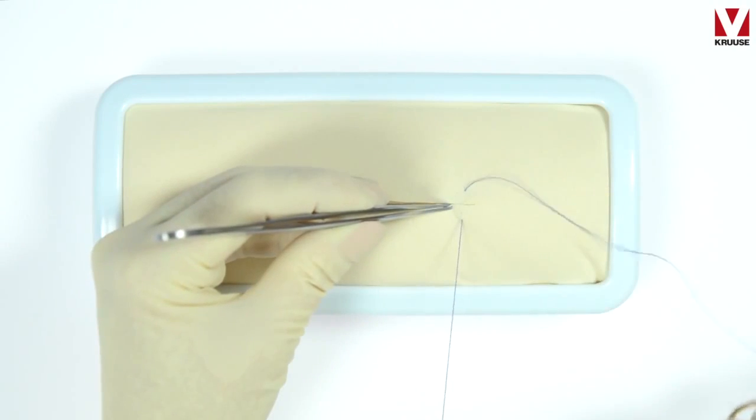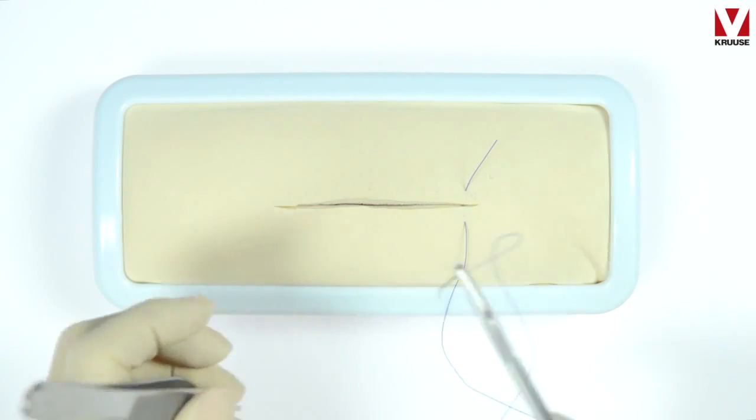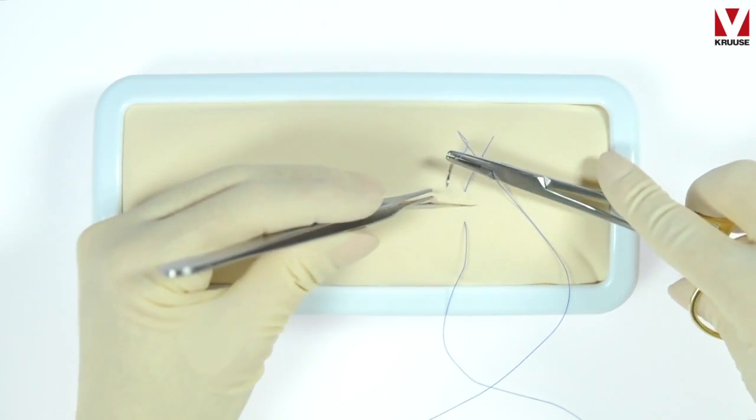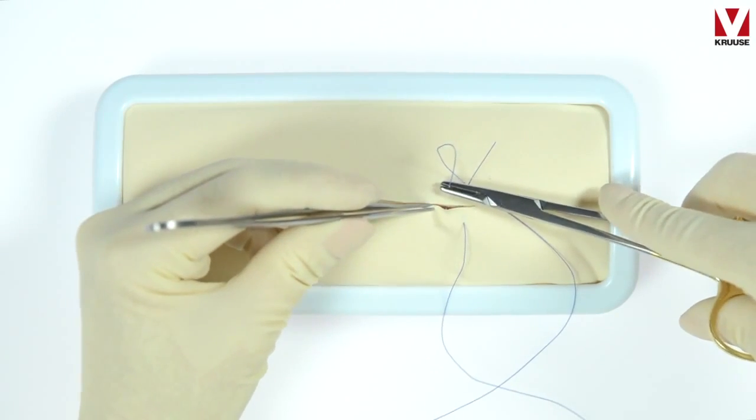Start far from the incision and then go near to yourself on the opposite side of the incision, then repeat that. So this is far, near, and then far, near again.